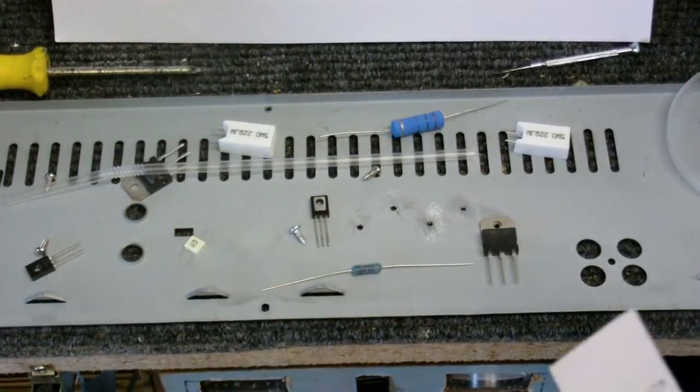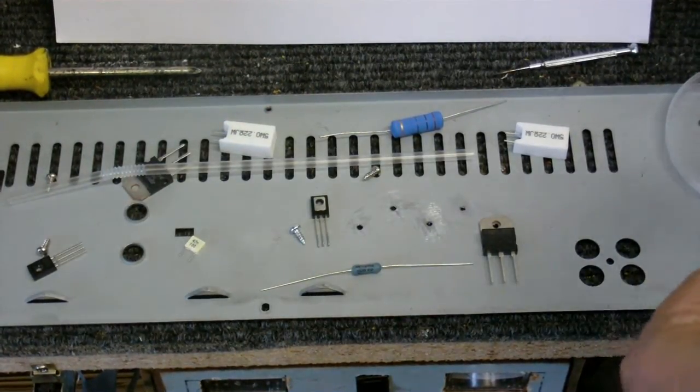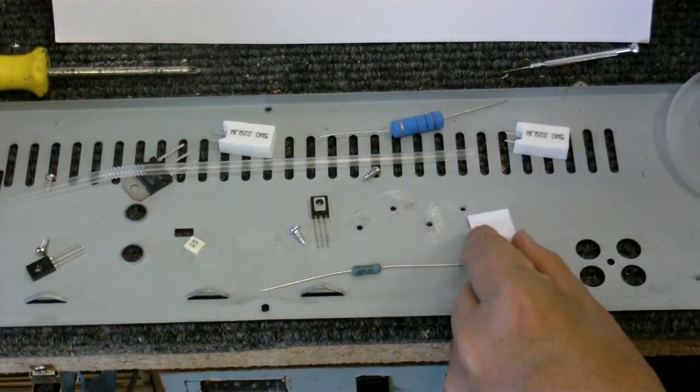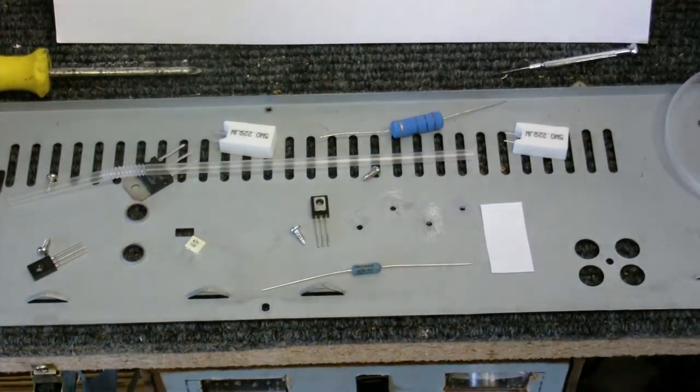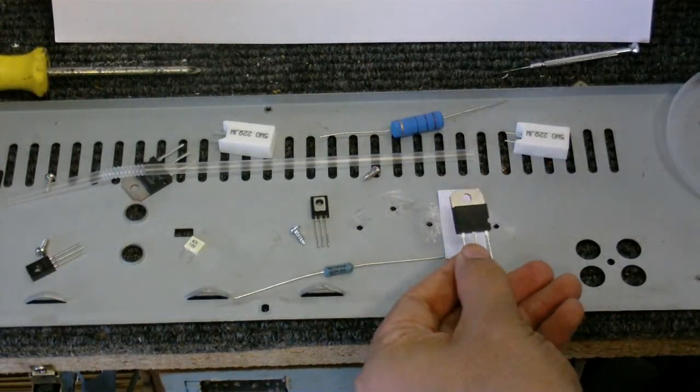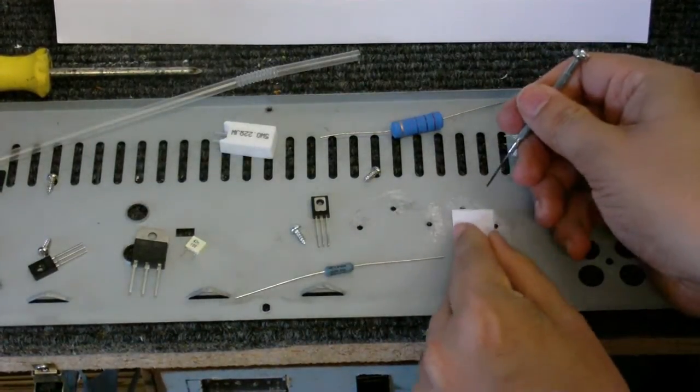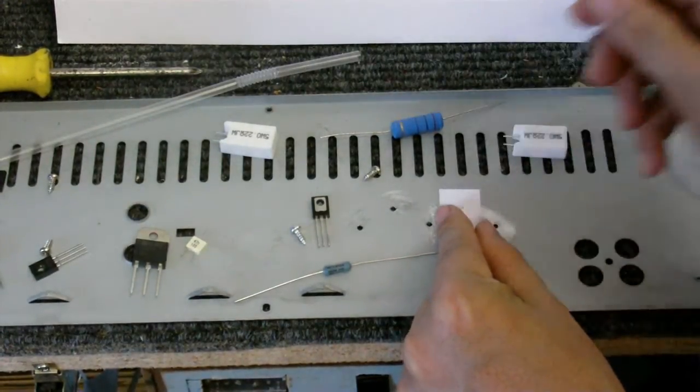Now, firstly, I'm going to cut the paper to shape, so it can fit under the transistors. OK, so this is where one of the transistors is going to go. Actually, that is where this particular transistor is going to go. So, I'll just poke a hole in the piece of paper, so the screw can go through.